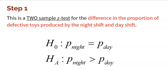Step one: define what we're doing. This is a two-sample Z test for the difference in the proportion of defective toys produced by the night shift and day shift. The null hypothesis is no difference — the proportions are exactly the same, whatever that value may be. The alternative is that the night shift really does produce a larger proportion of defective toys than the day shift.